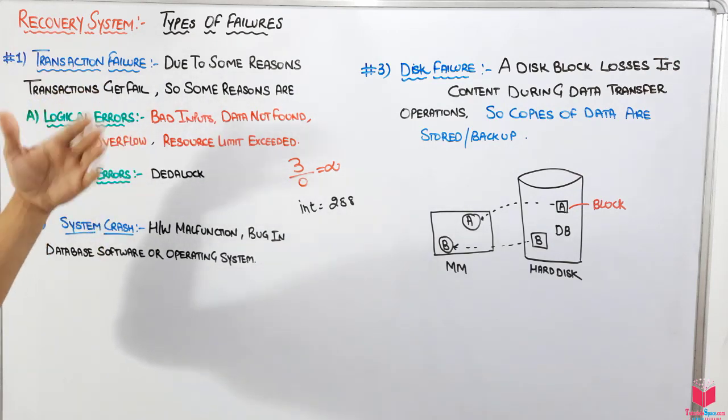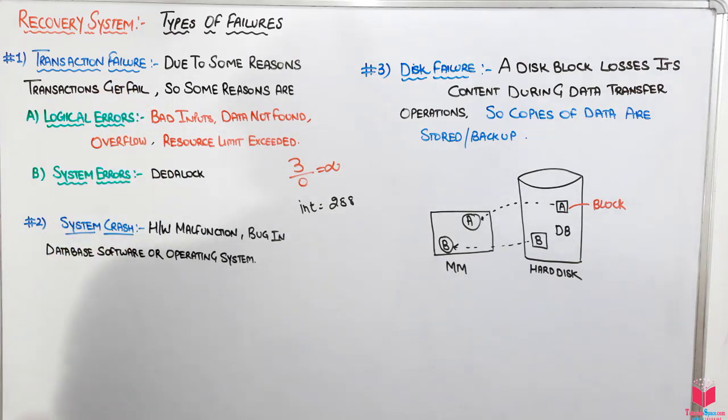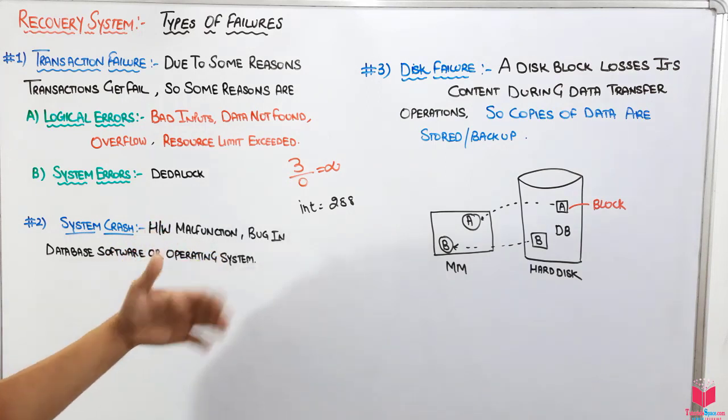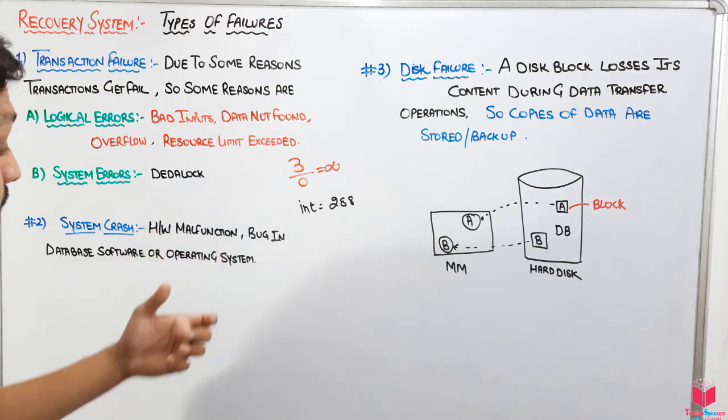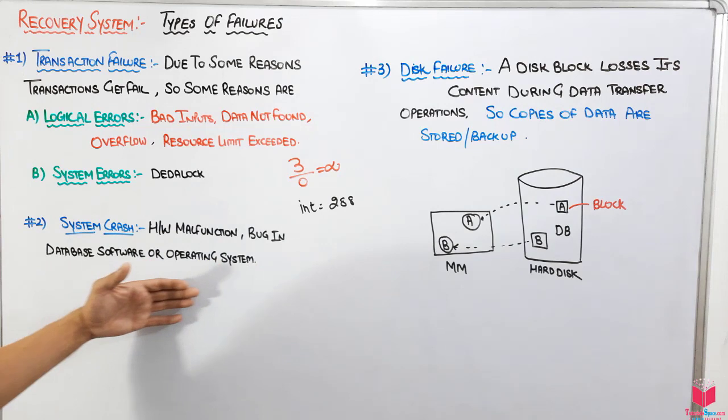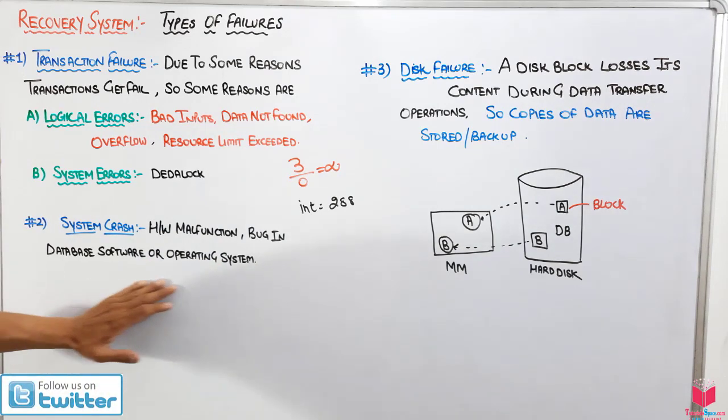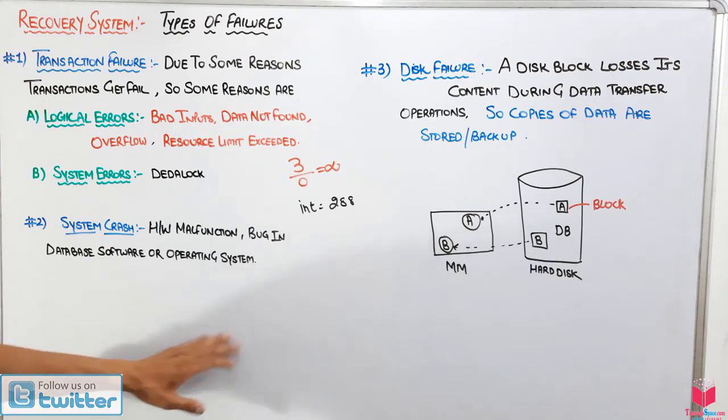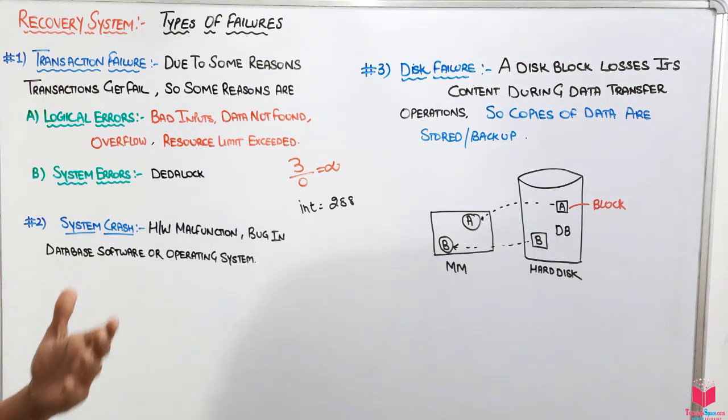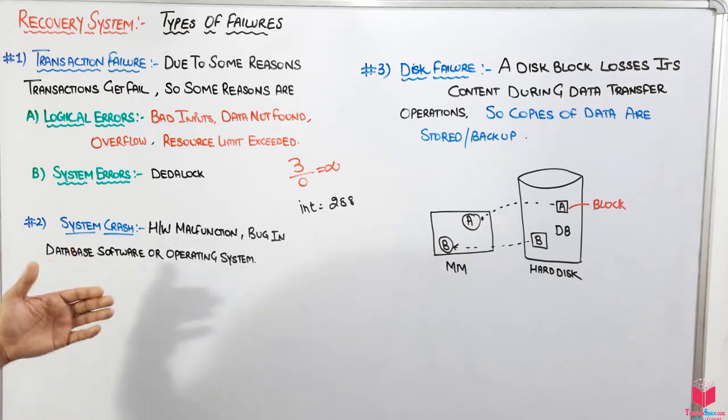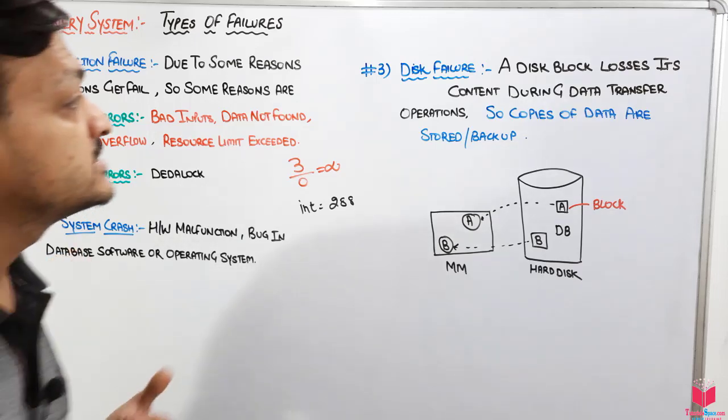Then after, it is a system crash. That means error in the hardware, malfunction - that means problem in the hardware. Then bug in database software or the operating system bugs, like the coding error or something in the database and then the operating system. Maybe there's a virus in the system, that means system will not work properly.